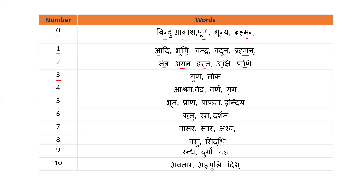To represent number 3, they used 3 Gunas — Sat, Rajas, Tamas — and 3 Lokas. For number 4, they used 4 Ashrams: Brahmacharya, Grahastha, Vanaprastha and Sanyasa. Also 4 Vedas: Rig Veda, Yajur Veda, Sama Veda, Atharvana Veda. And 4 Varnas or 4 Yugas.